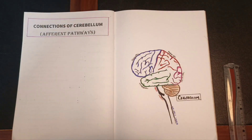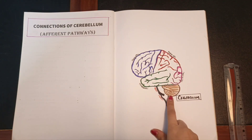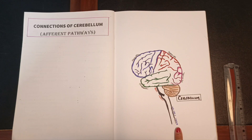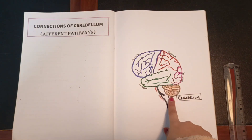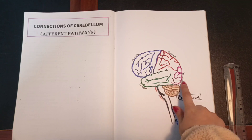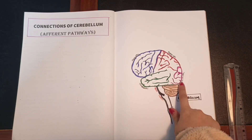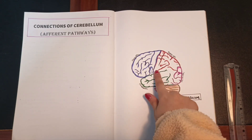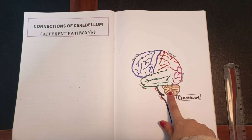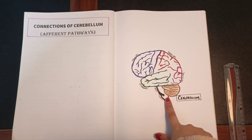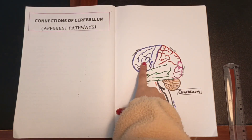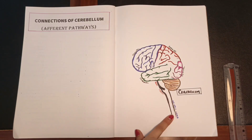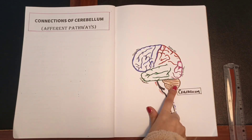We are going to start a very interesting topic in which we will discuss the different pathways which connect the cerebellum to the other structures of the nervous system. This will include the afferent pathways going to the cerebellum and some of the efferent pathways. The cerebellum is located in the posterior cranial fossa and is separated from the cerebral hemispheres by the tentorium cerebelli. It is connected to the cerebral cortex and to the spinal cord, and also receives fibers from the brainstem via the superior, middle, and inferior cerebellar peduncles. In this first video we will emphasize the afferent pathways which send signals from the cerebral cortex and spinal cord to the cerebellum.